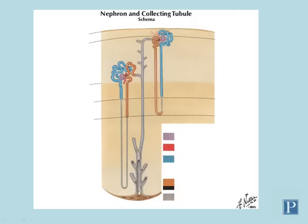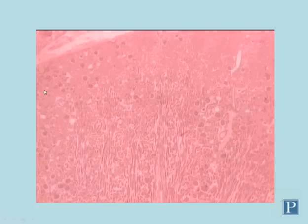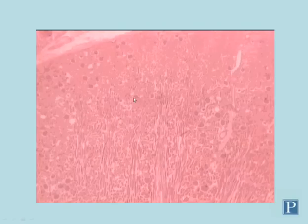Those are the important structures of the nephron that you need to know. Let's take a look at these structures in actual histological preparations. Here's a low magnification view of the kidney. Here's the outer portion — the cortex. You can identify the cortex because of the presence of these renal corpuscles. You can also see parts of the medulla, known as medullary rays, which extend up into the cortex and are composed mostly of collecting ducts. Here's a slightly higher magnification view of the cortex, where again you can see the renal corpuscles.